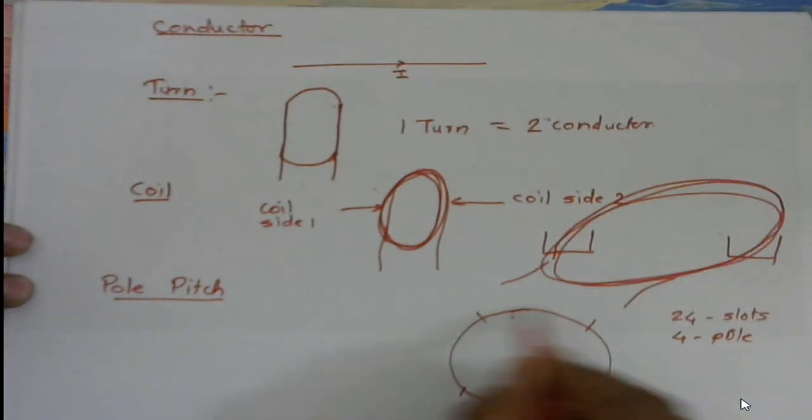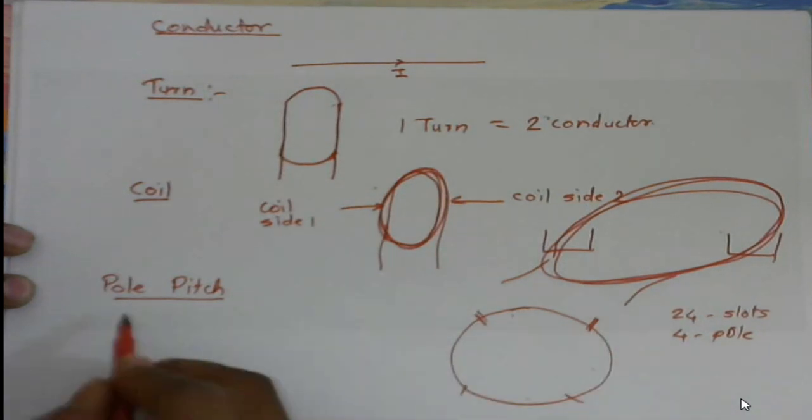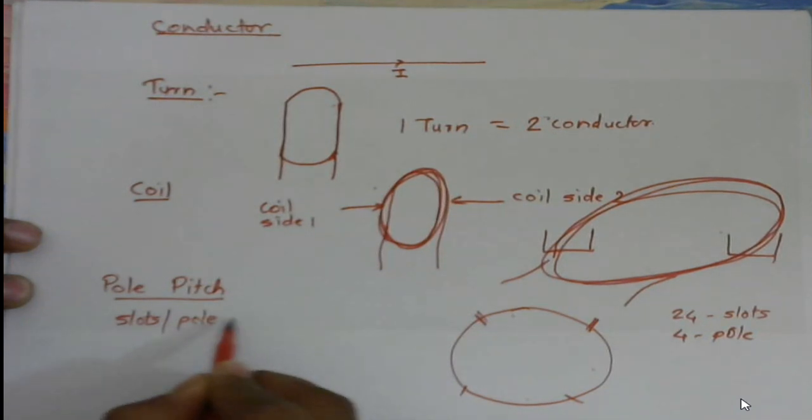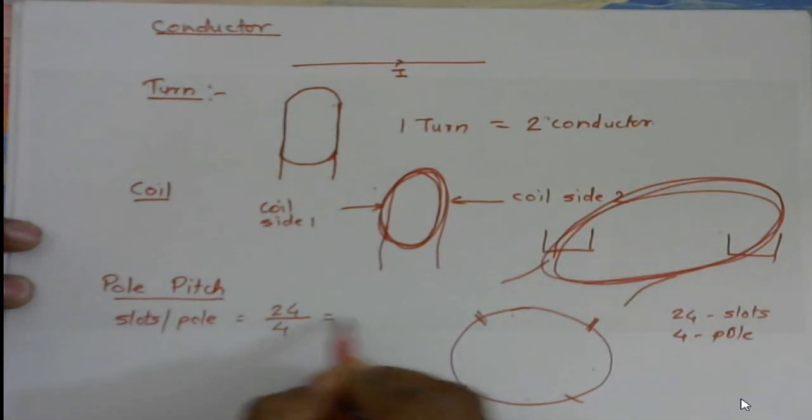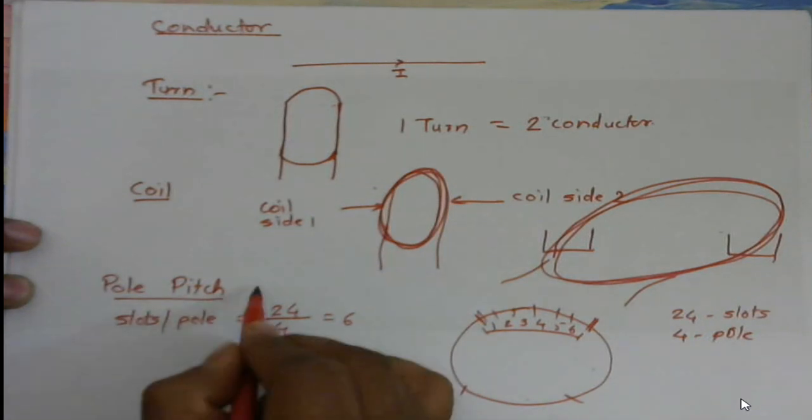So as total number of slots are 24, slots per pole is equal to total number of slots divided by number of poles, which is equal to six. So in this case, one, two, three, four, five, six - this six slots is nothing but the pole pitch.